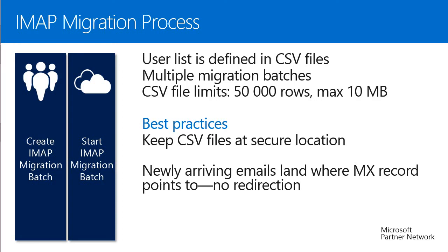Keep in mind that during IMAP migration, emails are still directed to the server the MX record points to. There is no redirection — emails continue going to your on-premise server until you change the MX record to point to the cloud. The rest of the migration proceeds the same way as cutover: incremental synchronizations run once per day, synchronizing all emails to the cloud. Emails land first on the on-premise server and are then synchronized to the cloud when the incremental cycle activates.